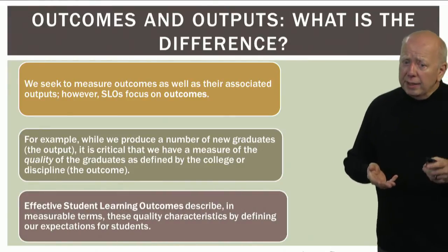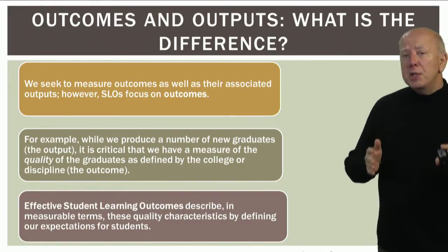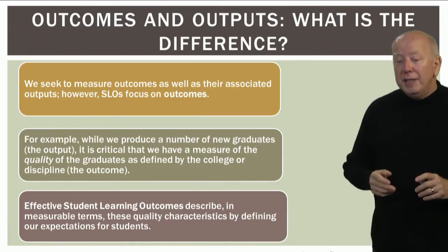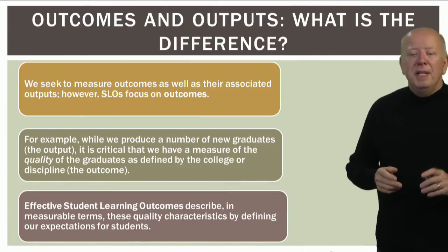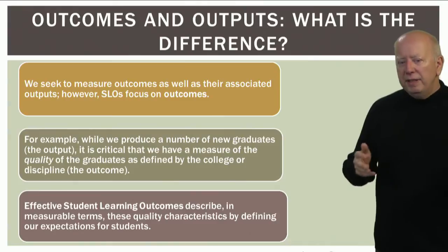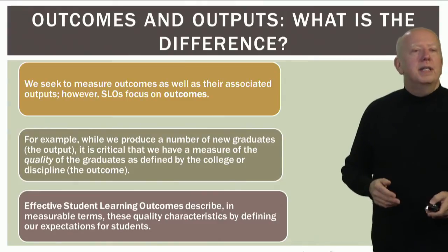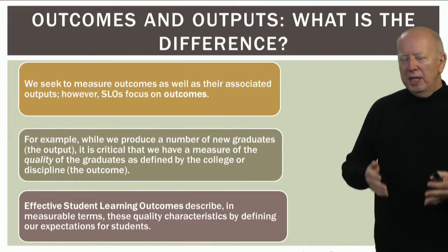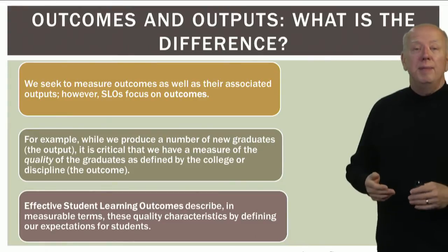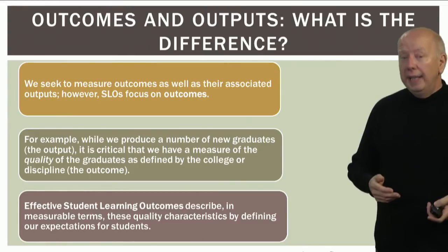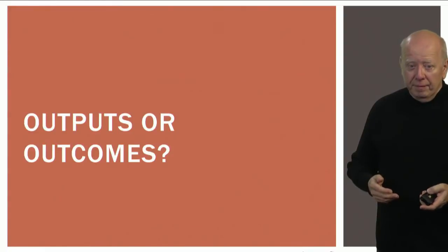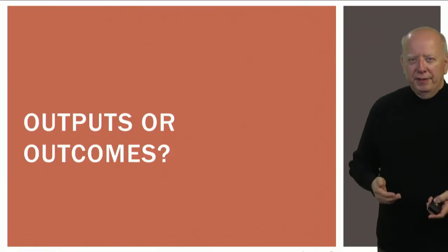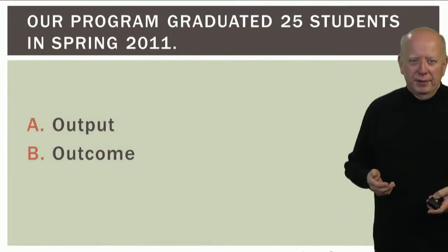Effective student learning outcomes describe in measurable terms these quality characteristics, basically by defining our expectations for our students. For undergraduate programs and now graduate programs, these are located in the catalogs.